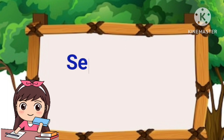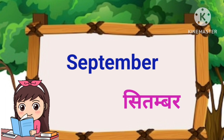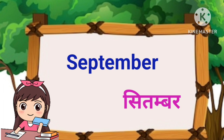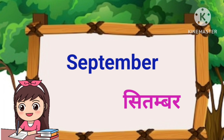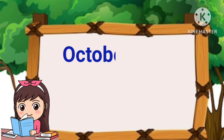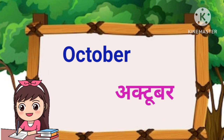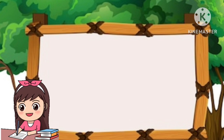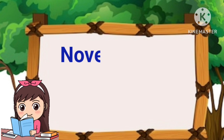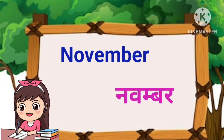S-E-P-T-E-M-B-E-R. September. September means September. O-C-T-O-B-E-R. October. October means October. N-O-V-E-M-B-E-R. November. November means November.